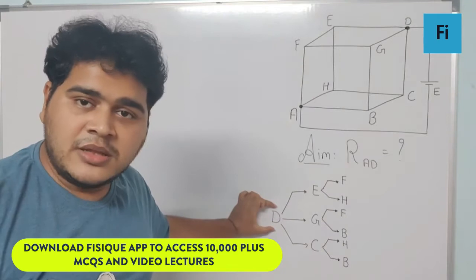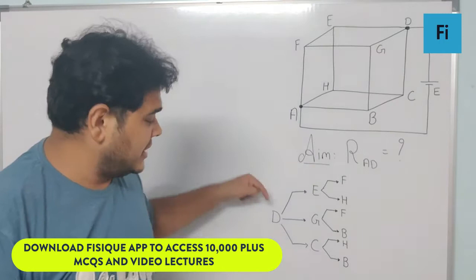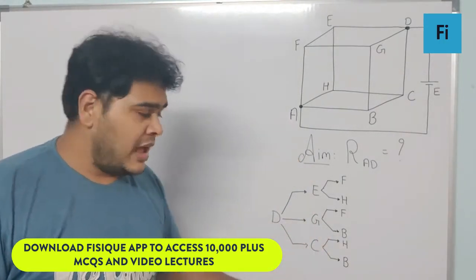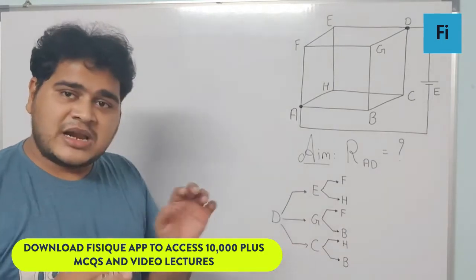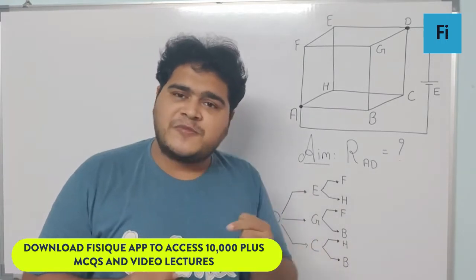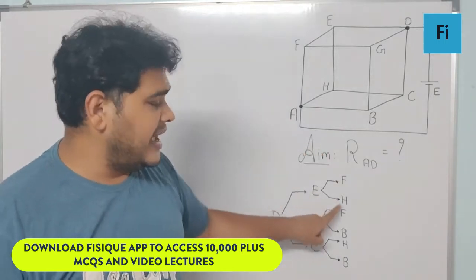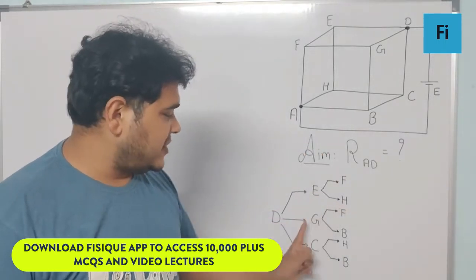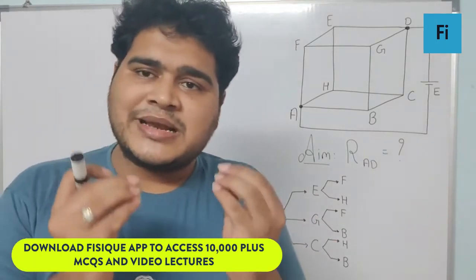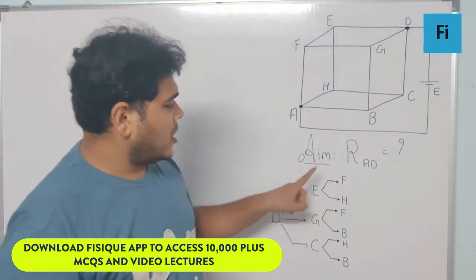From the entry terminal, current divides into three branches: DE, DG, and DC. Those three branches further divide into two branches each, making a total of six branches: EF, EH, GF, GB, CH, and CB.